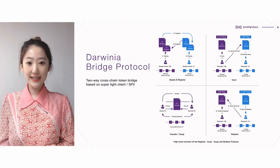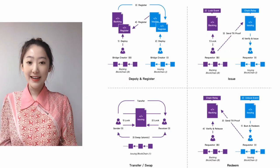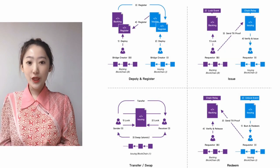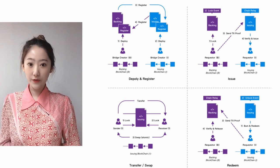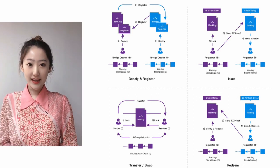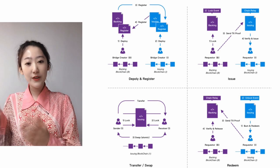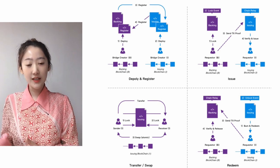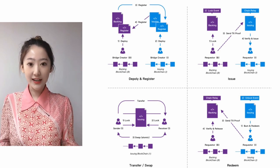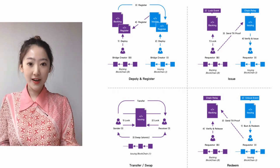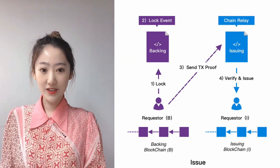Before we dive into some details, let's take a brief look at Darwinia's protocols. It consists of three core protocols: issue, transfer or swap, and redeem. In the diagram, we illustrate the process of moving some tokens from the source chain — we call it the backing chain — to the target chain, and we call it the issuing chain. Let's look at the top right diagram.